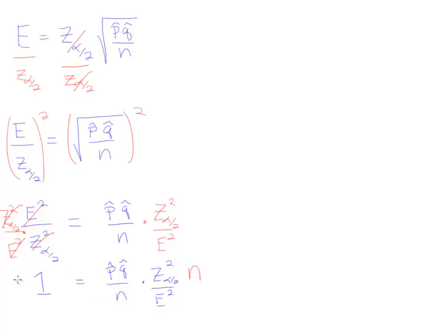The last thing I need to do is multiply both sides by N to get N over to the left-hand side and keep everything else on the right. N times 1 is just N, and that will equal this expression without the N. So we'll have P hat Q hat times Z alpha divided by 2 squared over E squared. That's our final expression.